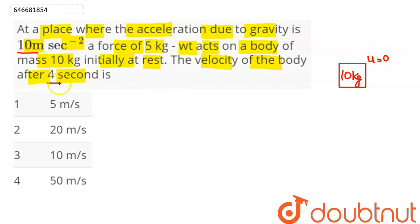After 4 seconds we need to find its velocity. When this force acts in horizontal direction, the body will be accelerated along this direction. This force is given to be 5 kg weight. So 5 kg weight means mg value is 10, so the force is of magnitude 50 N.